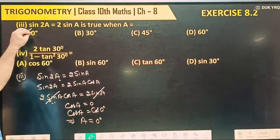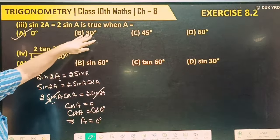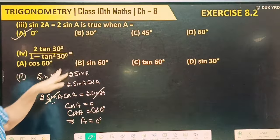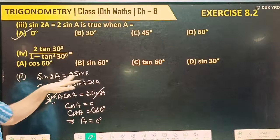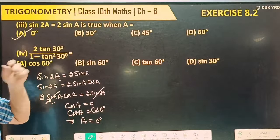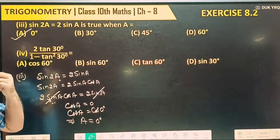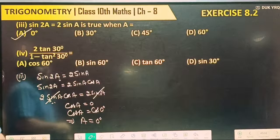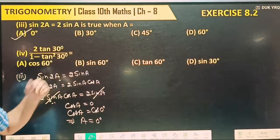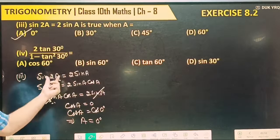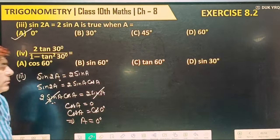Directly putting another value: if a equals 30 degree, then 2a equals 60 degree. Sine 60 is root 3 by 2, and 2 times sine 30 is 2 times 1 by 2 equals 1. So both are not equal, confirming a equals 0 is the specific solution.